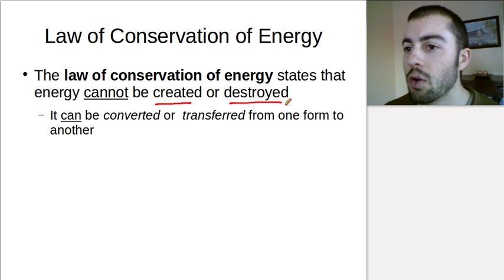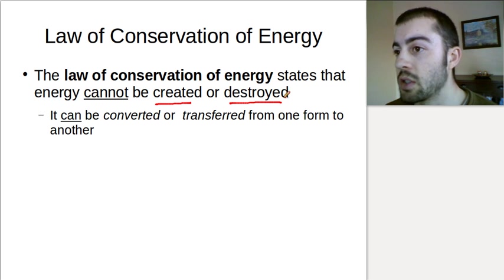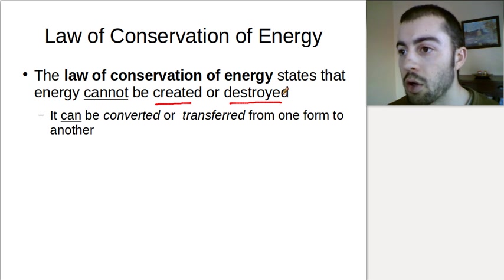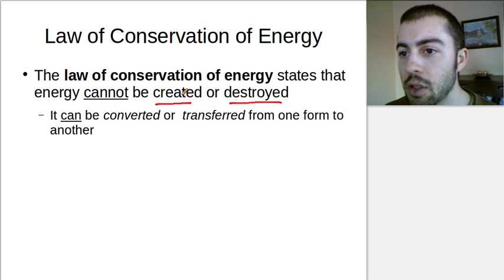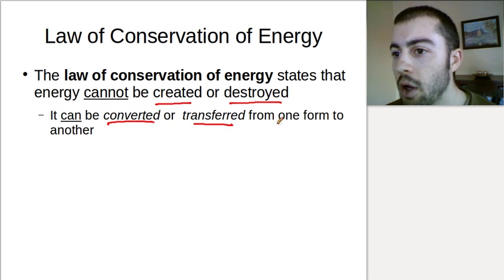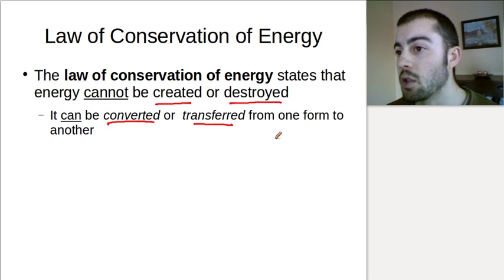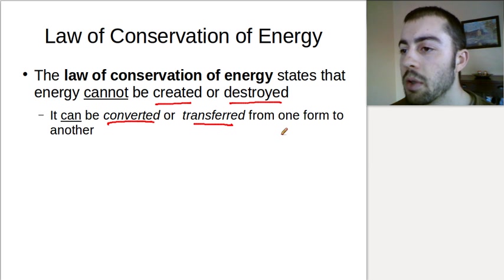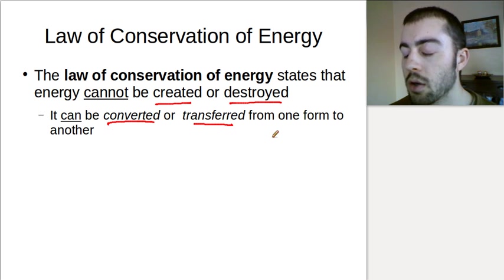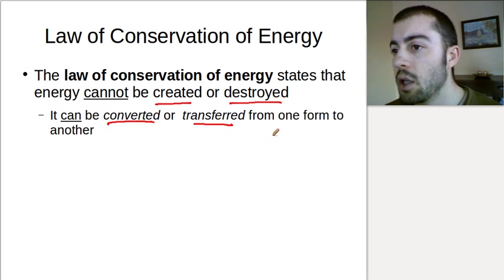Energy also can't be destroyed. So when something has energy and it loses energy, that energy doesn't just disappear — it must go to another source. Energy cannot be created or destroyed, but it can be converted or transferred from one form to another. When one object loses energy, that lost energy must go to something else. It might be lost in the air, it might be lost to friction as heat. There are a lot of different ways that we could lose energy, but it's not being destroyed — it is transferred somewhere else.